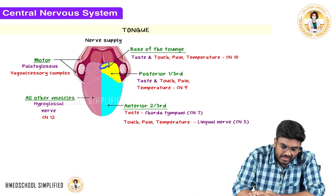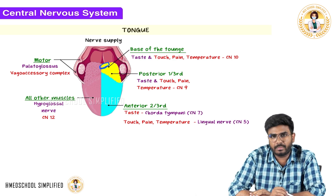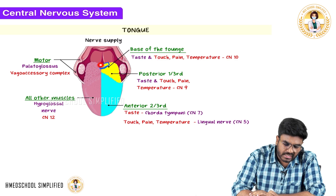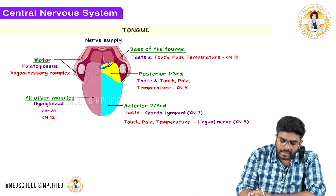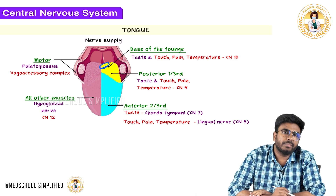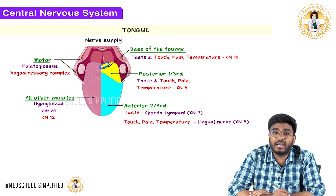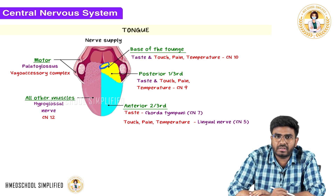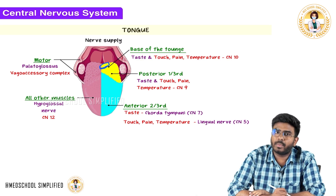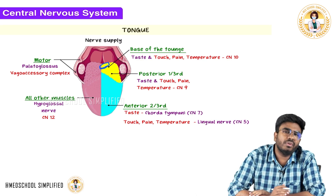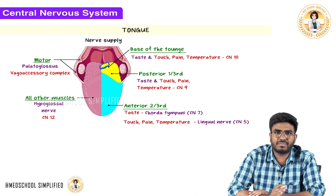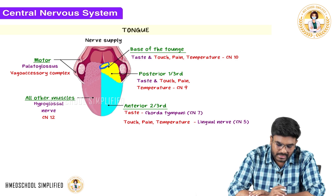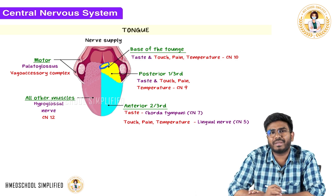From the base of the tongue, the general somatic sensations — touch, pain, temperature — are carried by the tenth cranial nerve. So touch, pain, and temperature from the tongue are carried by three cranial nerves: the 5th from the anterior two-thirds, the 9th from the posterior one-third, and the 10th from the base of the tongue.